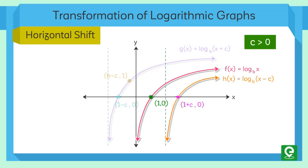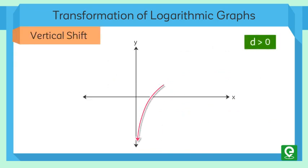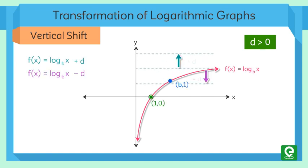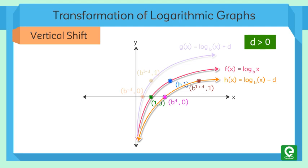Second transformation: vertical shift. When a constant d > 0 is added or subtracted to the parent function, the result is a vertical shift d units in the direction of the sign of d. When d is added, the graph is vertically shifted up by d units, and when d is subtracted, the graph is vertically shifted down by d units.